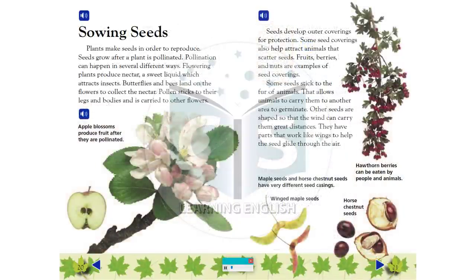Sowing Seeds: Plants make seeds in order to reproduce. Seeds grow after a plant is pollinated. Pollination can happen in several different ways.